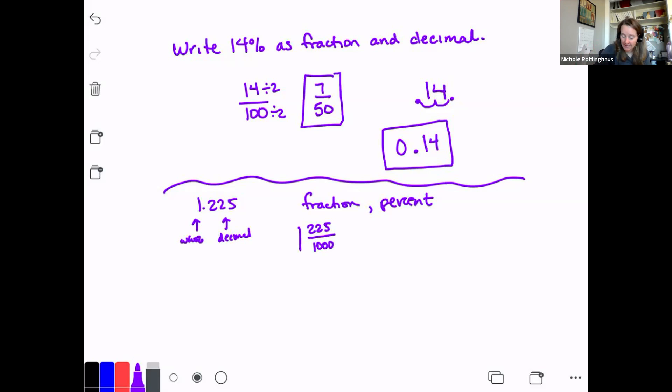Now we can reduce that. 225, I can divide by 25 on top and bottom. And so that's going to be 225 divided by 25 is 9. And 1,000 divided by 25. Oh, I should know that off the top of my head. And I don't. So I'm just going to get out my handy dandy calculator. And let's see, 1000 divided by 25 is 40. And so 1.225 written as a fraction is 1 and 9/40.